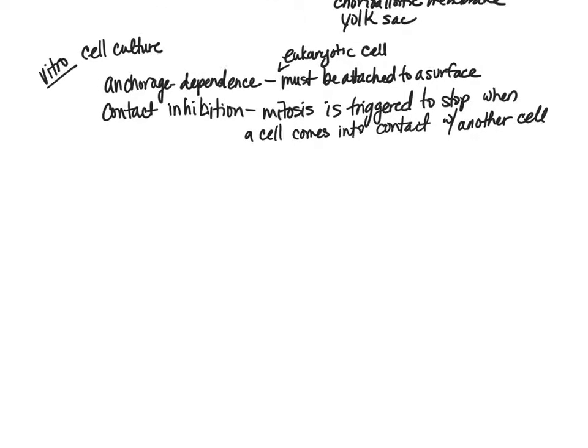This is also a characteristic of eukaryotic cells inside our body. Our liver cells, for example, are undergoing mitosis — but when they bump into another cell, they stop growing. Our liver cells aren't just going to keep growing and pushing everything out of the way; our cells have contact inhibition where once they bump into another cell, they stop. We have to take these two things into consideration when doing in vitro studies.